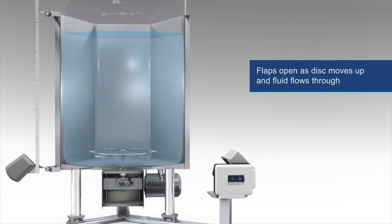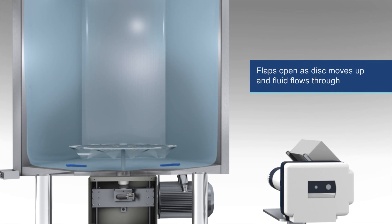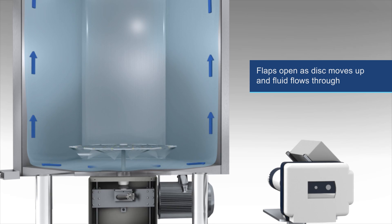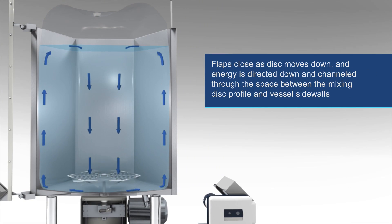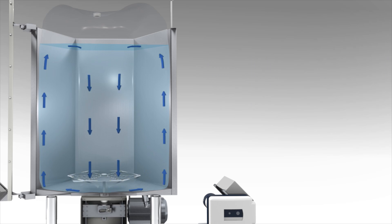The flaps open as the disk moves up from the bottom of the BPC and fluid flows through the slots of the disk. On the downstroke, the flaps close and energy is directed toward the bottom of the BPC and channeled through the space between the mixing disk profile and the vessel sidewalls.